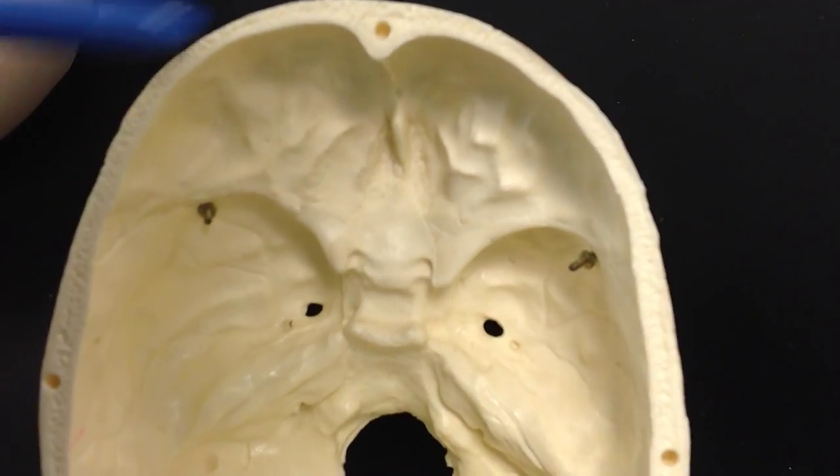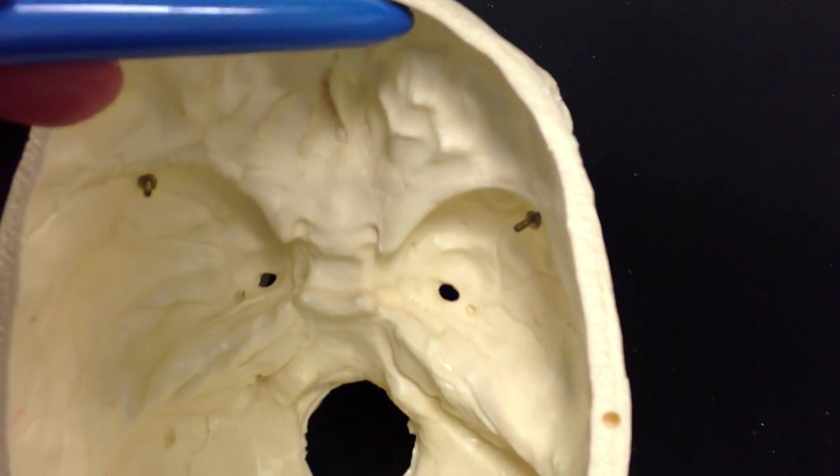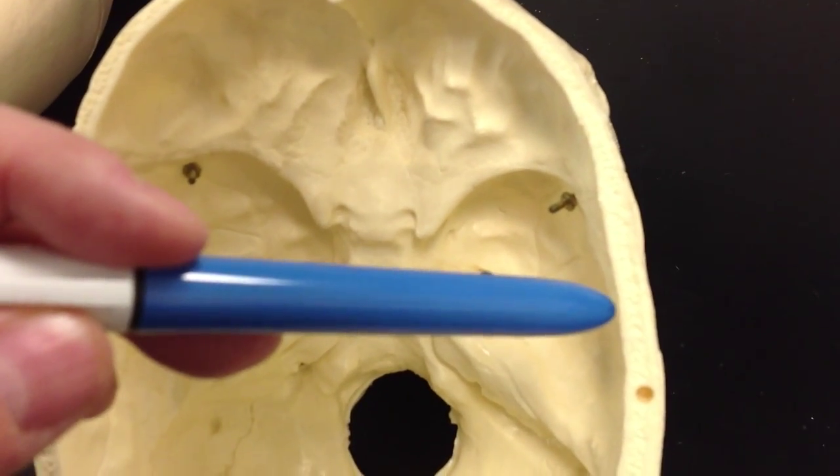We're going to flip this little guy right over. We're going to look at the interior structures. As we look at the interior of it, again, right in this area, we're going to have our frontal bone. And then, if we come over in this area, we're going to still have our temporal bone.